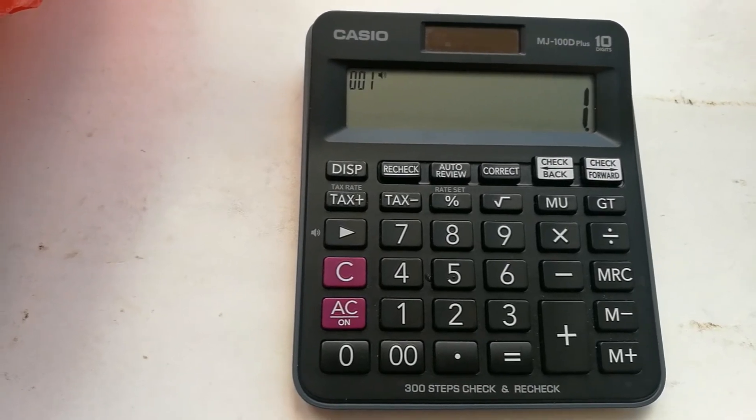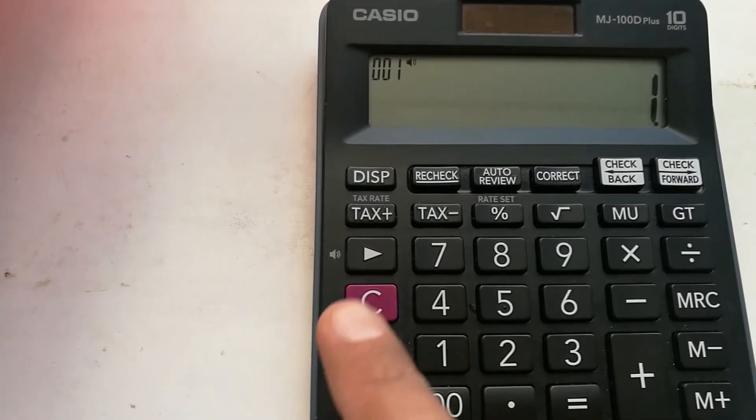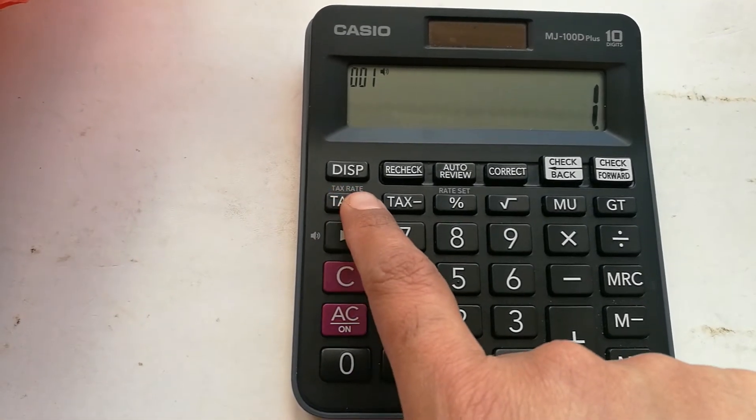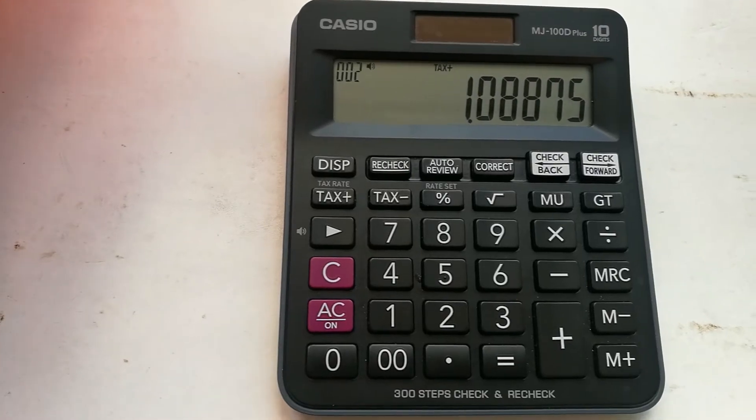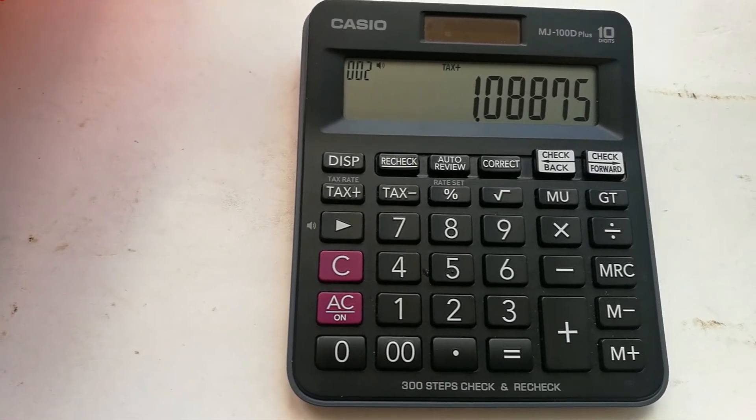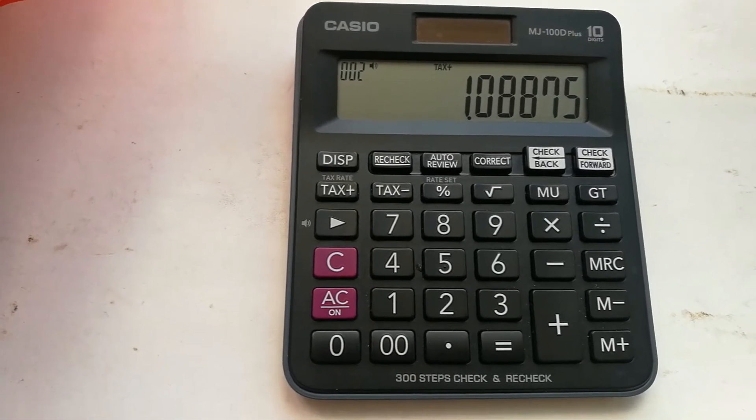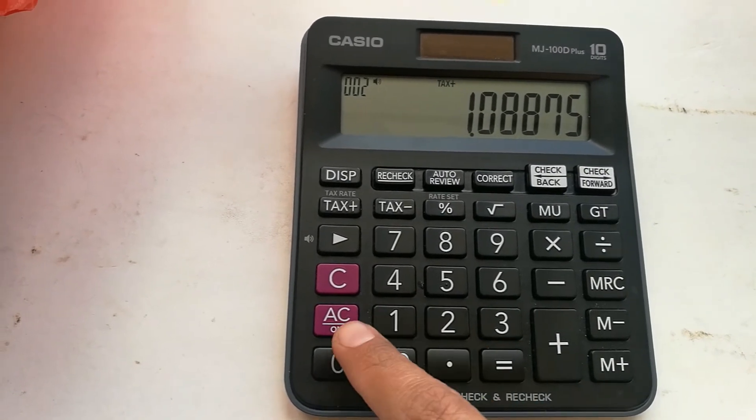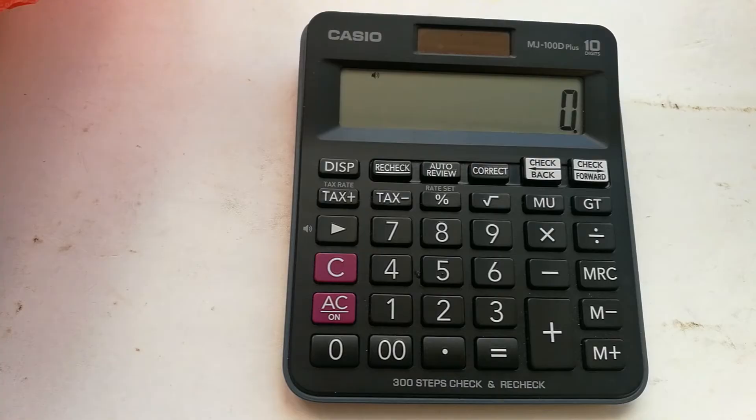For example, let's say one. You have to press one and then you have to press the tax plus button. When you press it, it will show you the tax rate which is already set. So when I press this, you can see here, this is your answer.